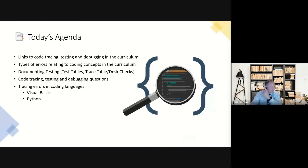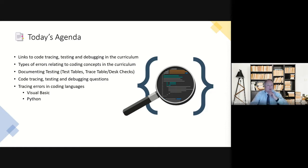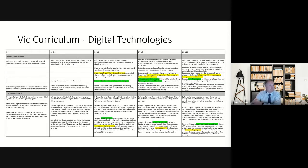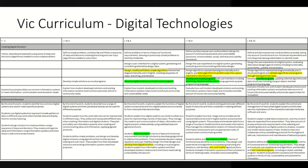Today we'll look at how the curriculum lists debugging and testing from year 7 to 12, look at a couple of different errors and how to go about solving them, and then some tracing and testing including VCE exam-style questions, to see how it all links to the end questions students might face. The Victorian Curriculum digital technologies definition covers what kids will learn in the 'creating digital solutions' area — that's where we find the writing and debugging of algorithms.